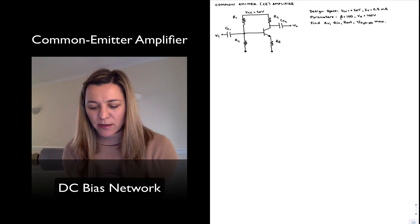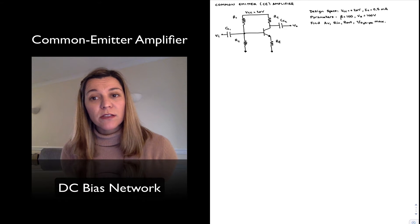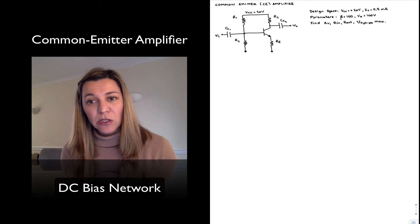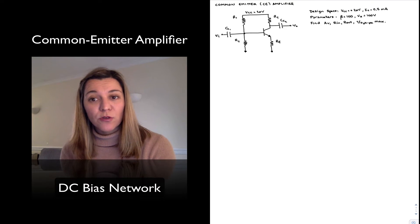The name common emitter is because the emitter is considered the common terminal, meaning the input is applied between base and emitter, and the output is taken at the collector and so is the voltage measured from collector to emitter.